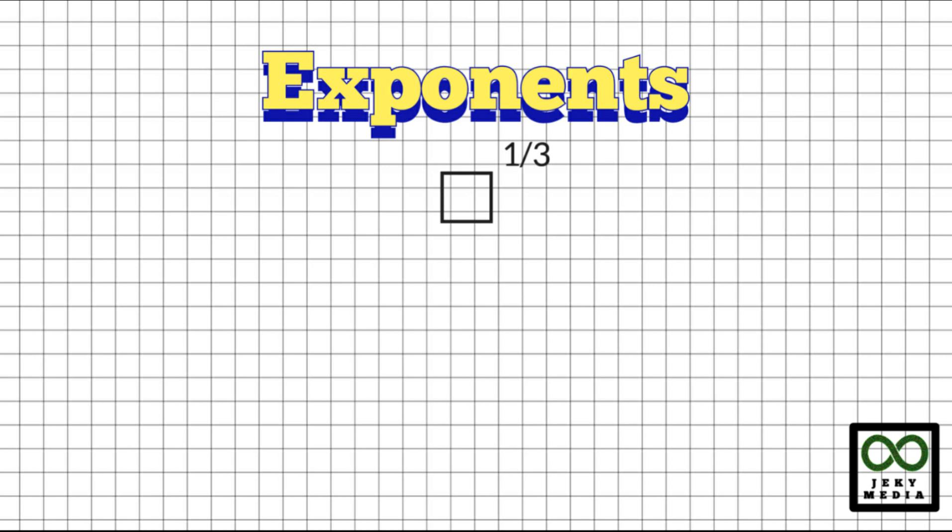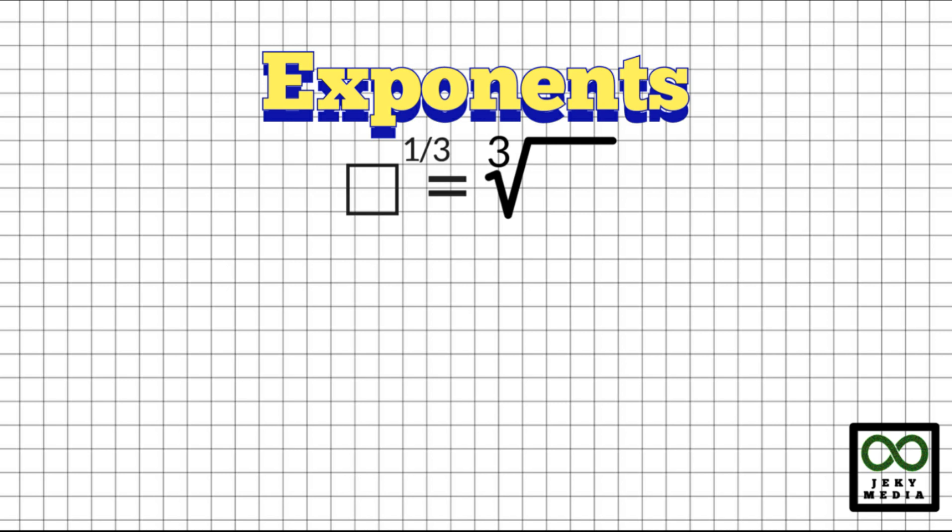Did you know that an exponent of one-third is also expressed as a root? In the law of exponents and radicals, the exponent one-third is also expressed as a cube root. Let's have a quick example.